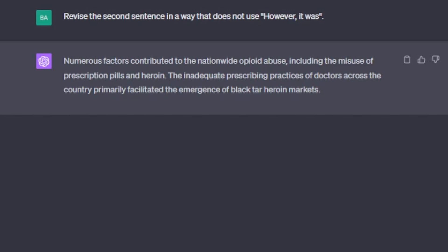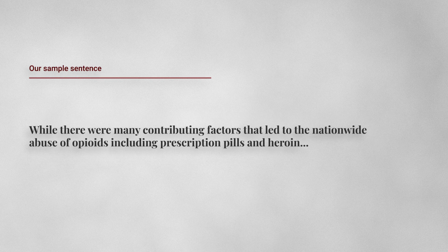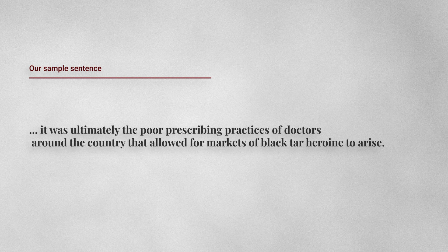One thing that AI does not correct in these examples is the fundamental problem with the structure of the original sentence that leads to a redundancy in thought. Let's look again at that original sentence. The first phrase indicates that prescription pills were a contributing factor to the abuse of opioids. The second phrase, though, indicates that the problem is with the poor prescribing practices of doctors.